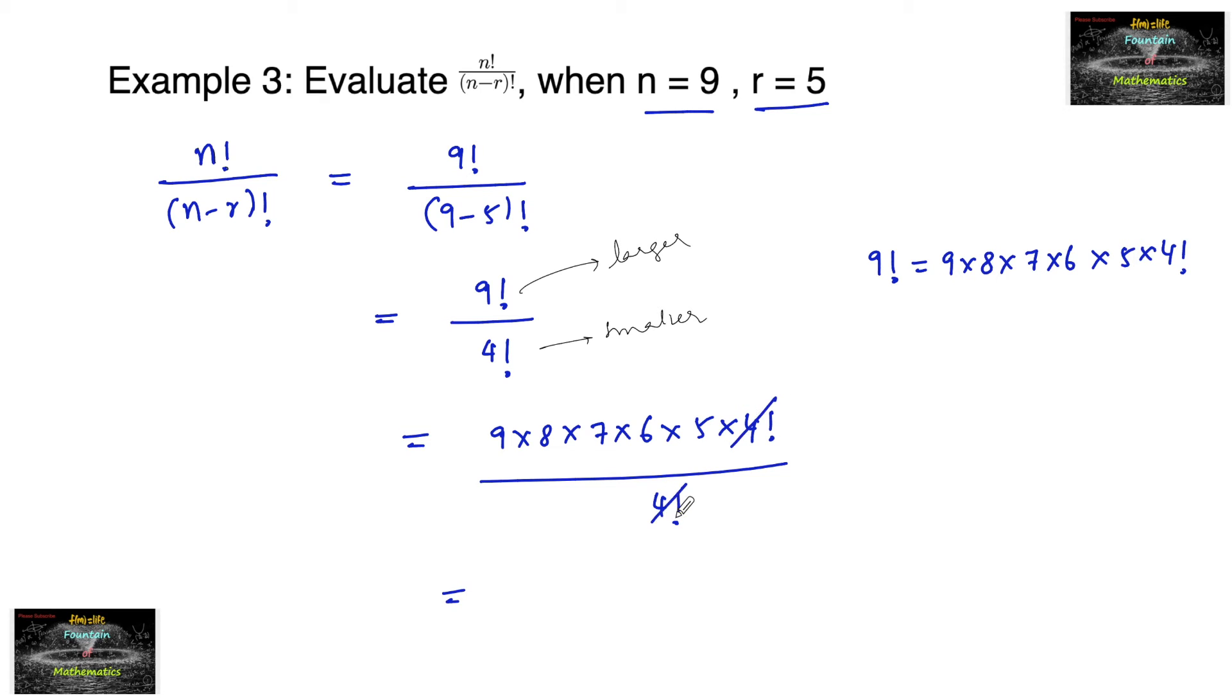We can cancel here 4 factorial and 4 factorial. And let us multiply. 5, 6 are 30.